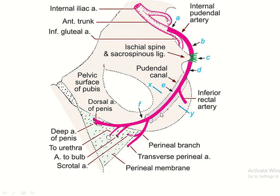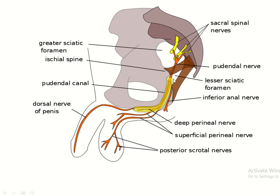This is the location of the pudendal canal. The internal pudendal artery first exits through the greater sciatic foramen, then relates to the ischial spine, then re-enters through the lesser sciatic foramen, enters the pudendal canal, and supplies the structures present in the perineum. This is the pudendal nerve and these are the branches of the pudendal nerve.